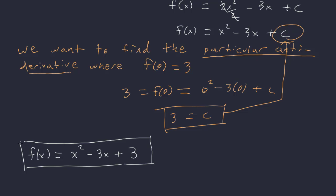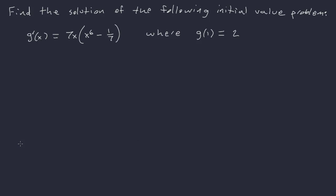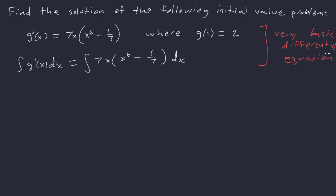The process will follow in every example: integrate, plug in a value, and solve for C. For another example, say g prime of x equals 7x times (x to the sixth minus 1/7), and we want g of 1 to equal 2. This is also your first example of what a differential equation is — a very basic one. You have an equation in terms of derivatives, and you want to get back to the original function.